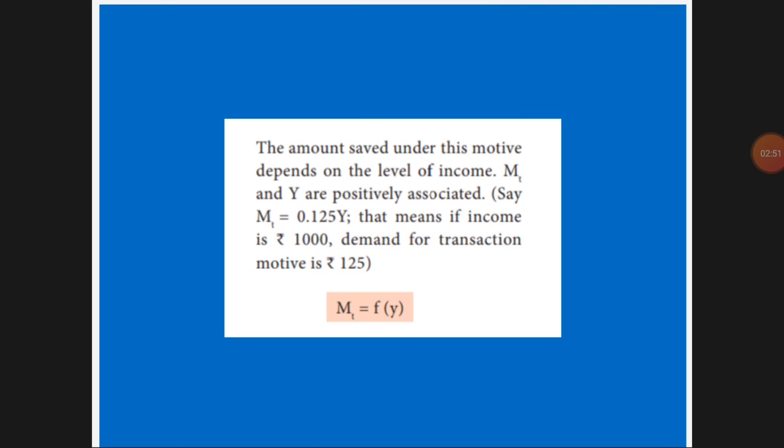The formula for transaction motive is: M1 equals f(Y), that is, it is a function of income.